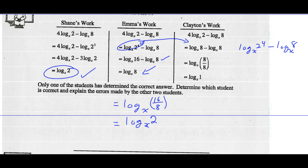So the log of 2 to the 4th base x minus the log of 8 base x. Looks like what he was trying to do, but 2 to the 4th does not equal 8. 2 to the 4th equals 16. Had he got that right, he would have went 16 divided by 8, which would have been the log of 2. Then he would have been correct.